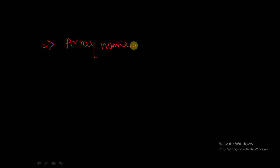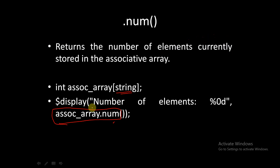The syntax for using built-in functions is: array name followed by dot and then the function name. So `array_name.num` — where `associative_array` is the array name and `num` is the built-in function — will return the number of elements present in the associative array.